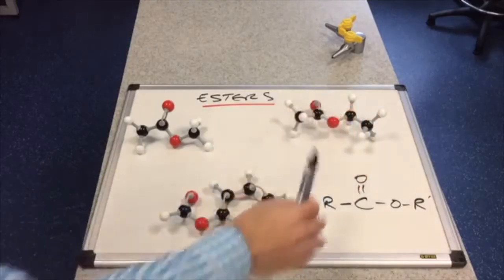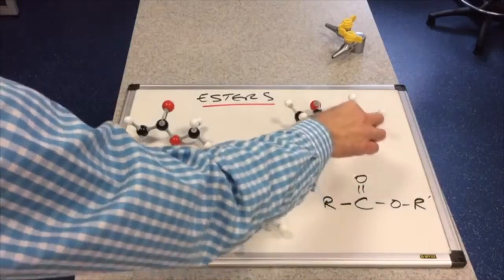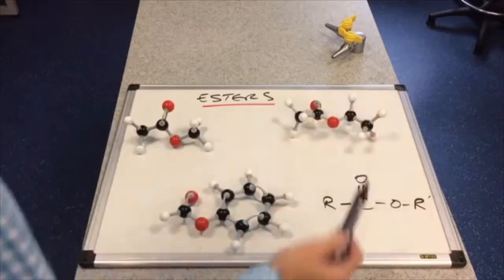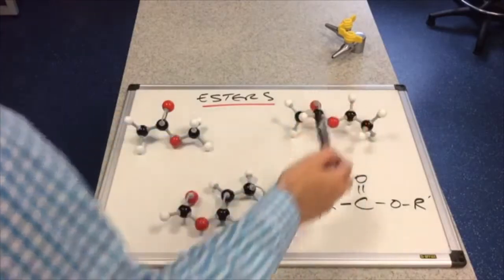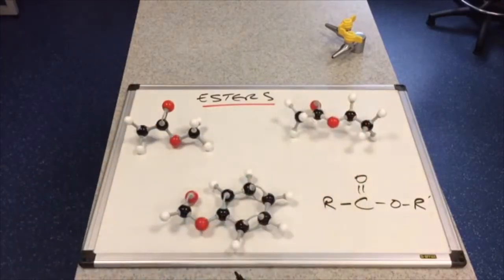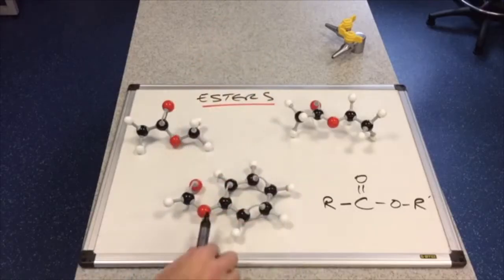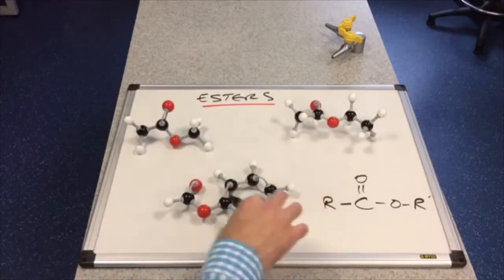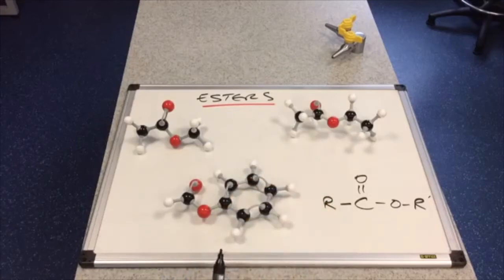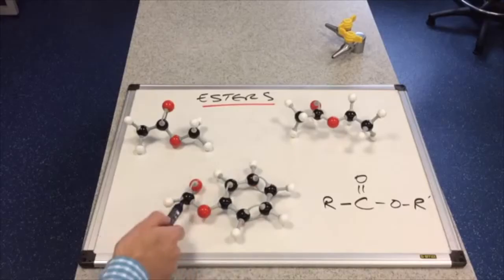We'll do this one now. So this R group here is an ethyl group. Ethyl, one, two, ethanoate. And we look at this one now. So we've got, this is a benzene ring which is missing a hydrogen, so this is a phenyl group. Phenyl, one carbon, methanoate.